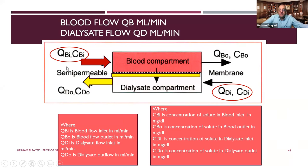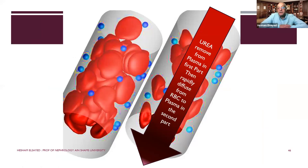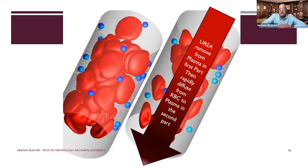An important question: clearance of toxin from the blood — is it from the whole blood or from the plasma? Toxins are dissolved in the plasma, not in the cells. So removal of solutes or toxins is from the plasma. The plasma constitutes about 65% in uremia depending on the patient's hematocrit. So of a blood flow of 200 ml per minute, the plasma flow is around 130 ml per minute. Blood flow does not mean you are removing toxins except from the plasma.